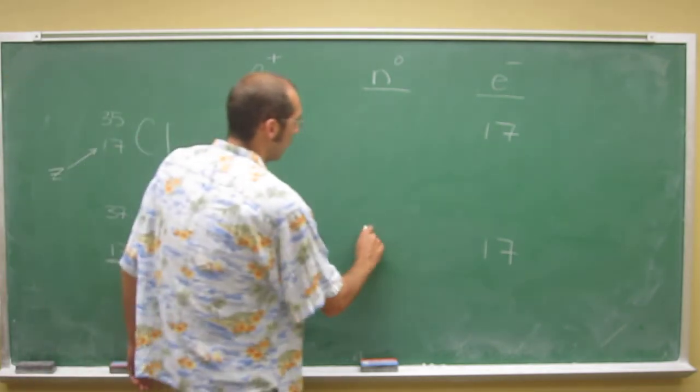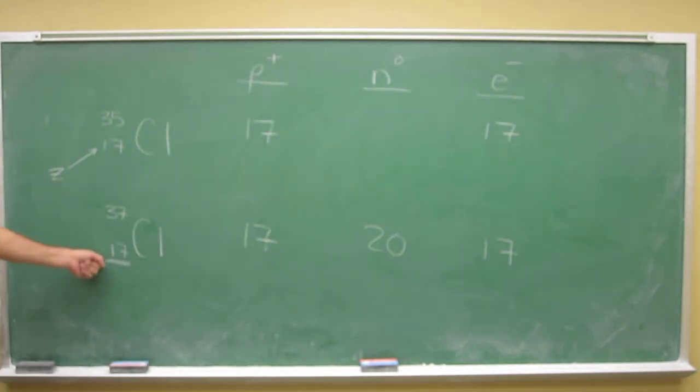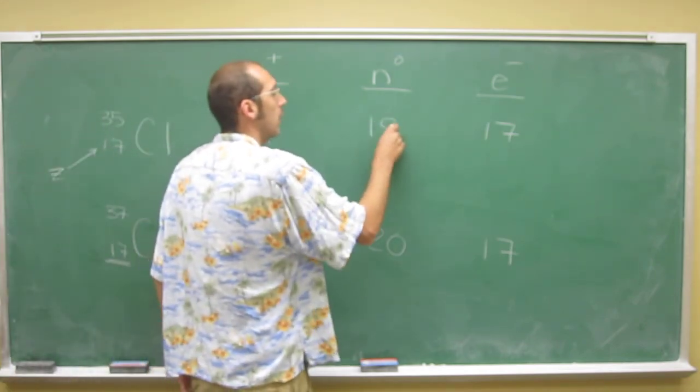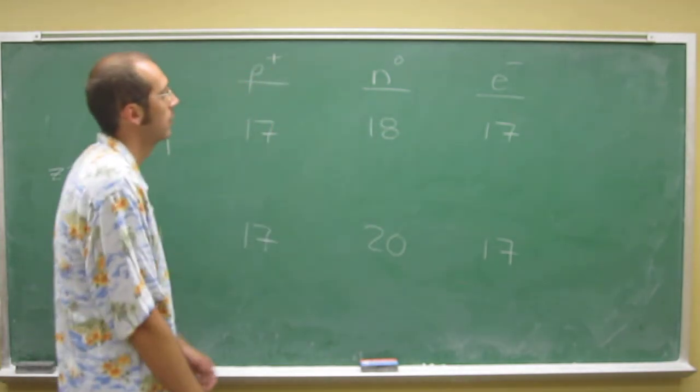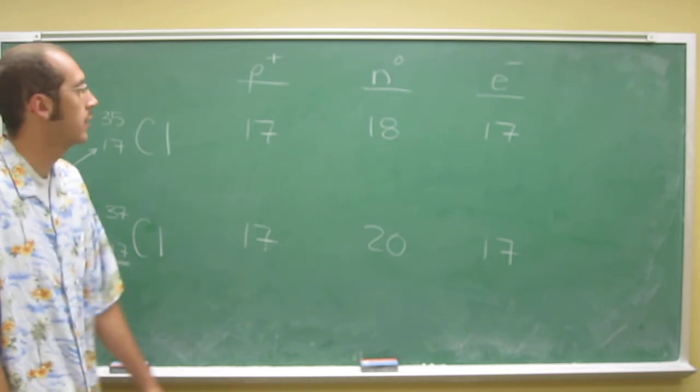Here we've got 20, because 37 minus 17 is 20. And 35 minus 17 is 18. That's how you calculate the number of protons, neutrons, and electrons.